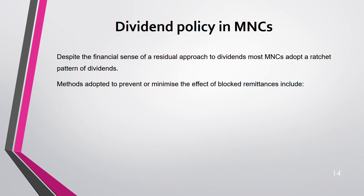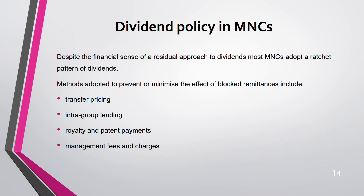Methods adopted to prevent the effect of blocked remittances include: transfer pricing — setting a price that allows remittance of previously blocked funds; inter-group lending between group companies; royalty and patent payments; management fees charged by the parent; and parallel loans in the host currency. However, the host government may try to prevent many of these methods, whether transfer pricing or parallel loans.